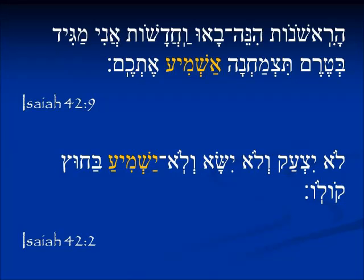In Isaiah 42:9 and Isaiah 42:2 we have a Hifil. Remember, the little Yud infix will tell you that it's a Hifil. We're looking at the verb root Shema, Shin-Mem-Ayin. You know this means 'to hear,' and in the Hifil form 'to cause to hear' or 'to announce.' Ashmiya — 'I will announce it to them,' 'I will cause them to hear it.' Yashmiya with the Yud prefix — 'he will announce it,' or in this case 'he will not announce it,' Lo Yashmiya. The Yud prefix is the same; the Yud infix tells us the Binyan is Hifil — it's causative. He will announce. He will cause it to be heard.